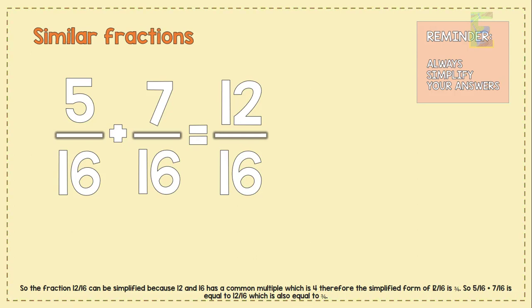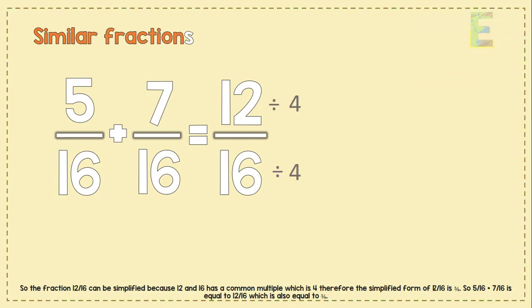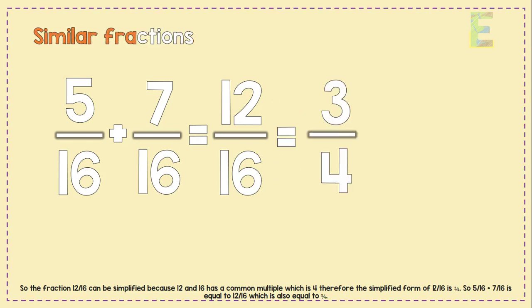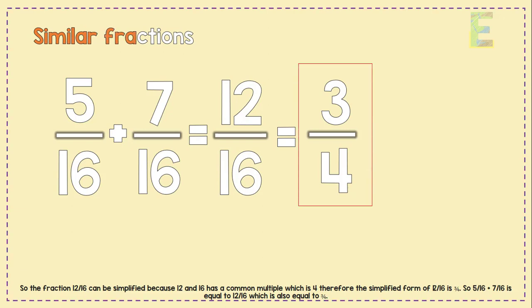A quick reminder: we should always simplify fractions. The fraction 12 over 16 can be simplified because 12 and 16 have a common factor which is 4. Therefore the simplified form of 12 over 16 is 3 over 4. So 5 over 16 plus 7 over 16 is equal to 12 over 16, which is also equal to 3 over 4.